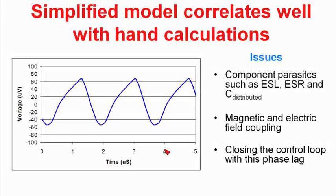There's ESL that's associated with the output filter capacitors. There's ESR. There's distributed capacitors that's associated with the inductors. There's also magnetic and electric field coupling that we can't simulate or we haven't simulated yet. The current in the first output filter inductor might couple into the second stage and reduce the effectiveness of our filter.